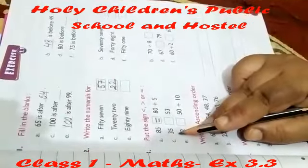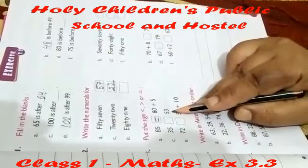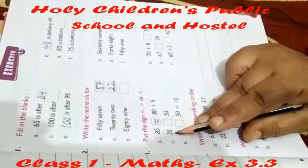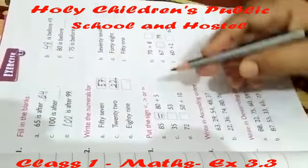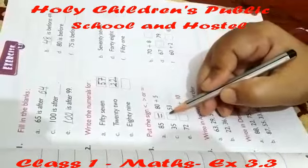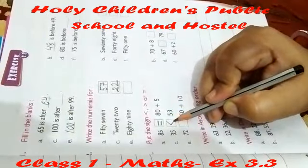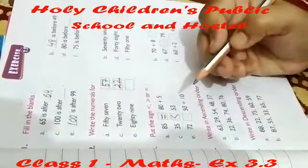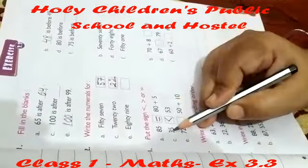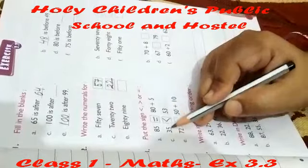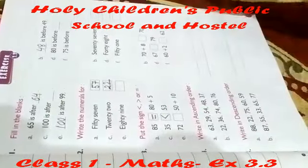Next question is 35 and 53. So 35 is less than 53. We put the greater than mark on the side of 53. 53 is greater than 35 and 35 is less than 53.